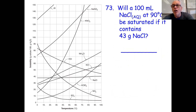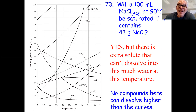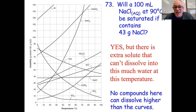Will a 100 mL solution at 90 degrees be saturated if it contains 43 grams? Yes — not only will it be saturated, there'll still be 3 grams at the bottom. It doesn't saturate at 43; it saturates at 40 grams. You can't fit 43 grams in, but there's enough to saturate it and the rest will be at the bottom.